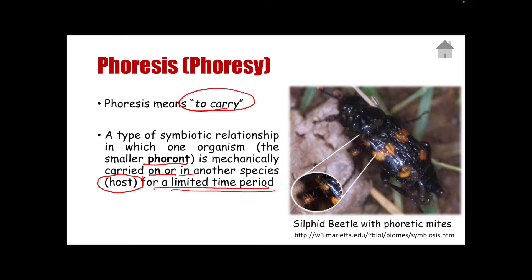The strict definition of phoresis excludes any direct physiological benefit during transport or transit. For example, if the host does not provide the phoront with food while in transit or does not contribute to the development of the phoront during transit, then it would mean phoresis. However, if feeding does occur — if the host is feeding the phoront — the more appropriate term would be parasitism. Although phoresi is not a form of parasitism, phoresi can eventually extend into a parasitic association.